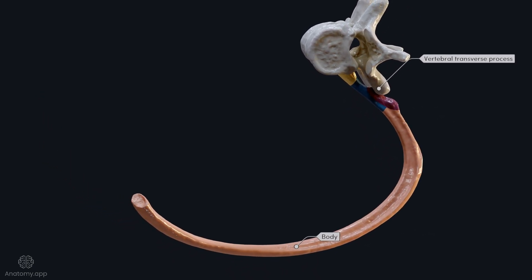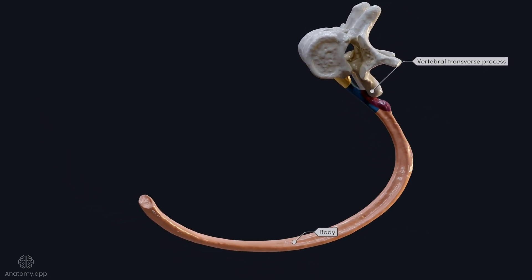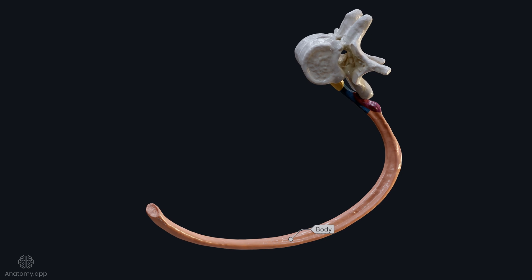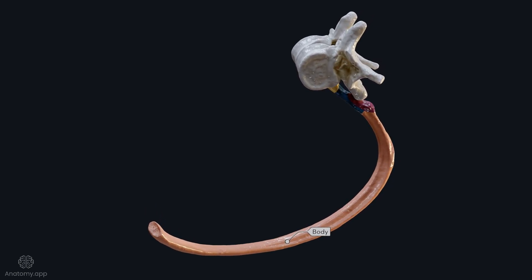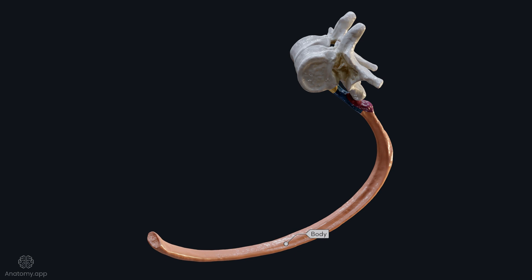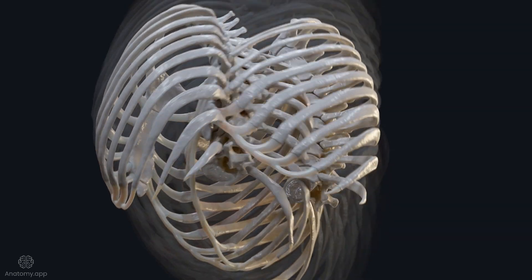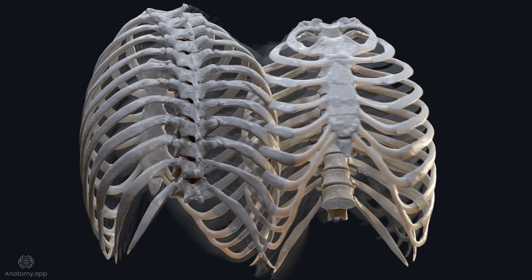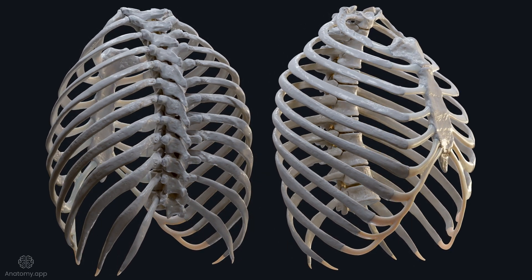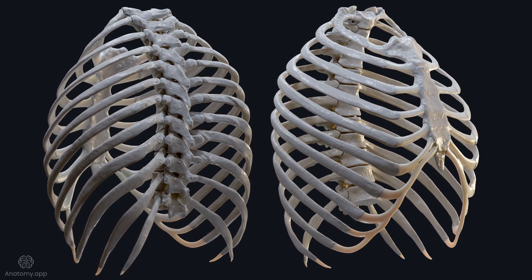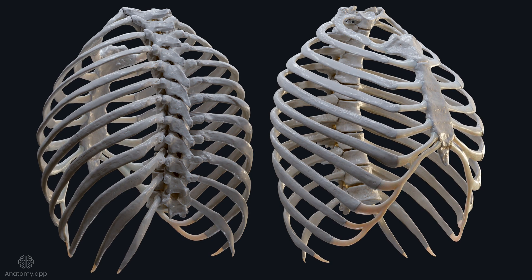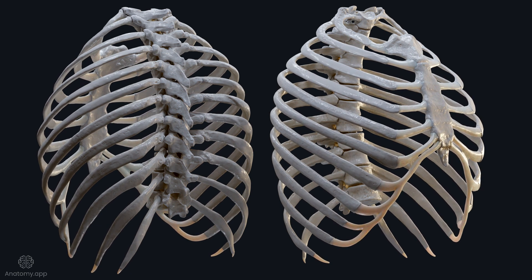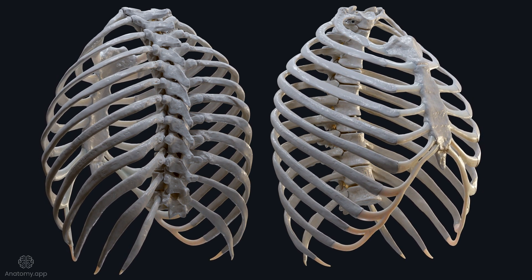The body, or shaft, is the largest part of the rib, characterised by its thin, flat and curved shape, situated between the neck and the costal cartilage. During inhalation, all ribs externally rotate and elevate anteriorly, while internally rotating and depressing posteriorly. The reverse occurs during exhalation.